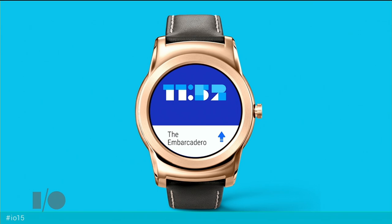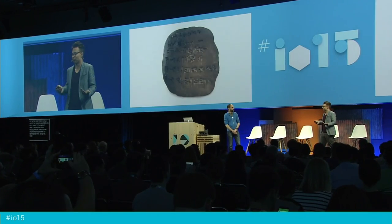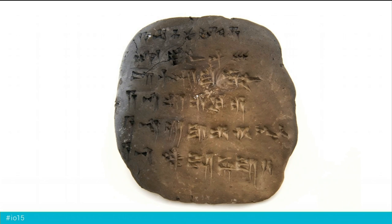Before we get too deep into that, I want to set a little context around what it means for us as people writing things down and having an easy way to reference that. So let's take a big step back — actually, 5,000 years back. The Mesopotamians first started writing things down on clay tablets for ease of reference, and that's what kind of kicked off civilization. The ability to write something down and refer to it or show it to someone else was a really powerful enabling technology. But it had some downsides. A clay tablet is heavy, it's brittle, and you can only write on it once.